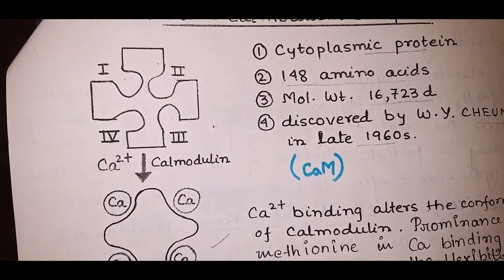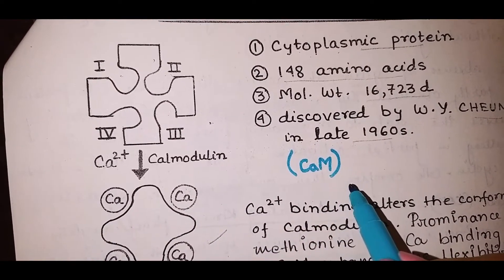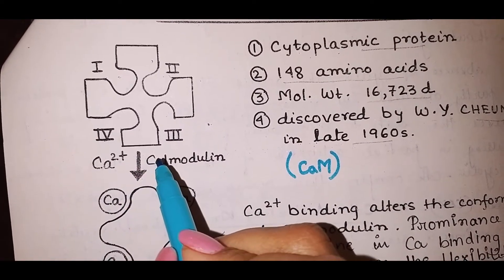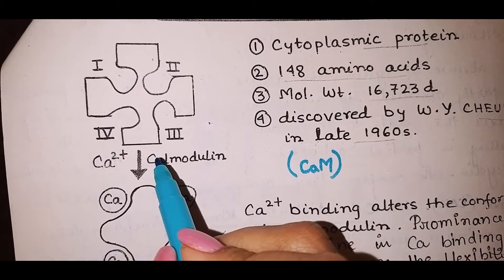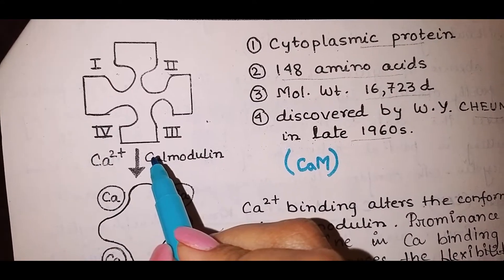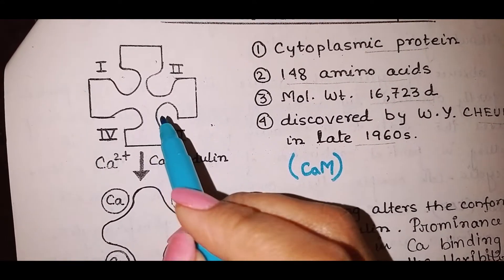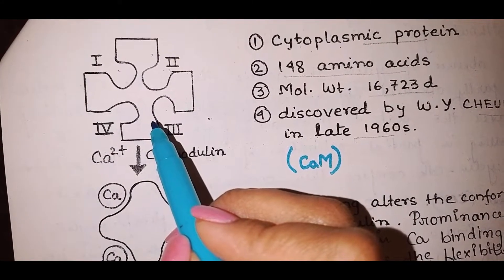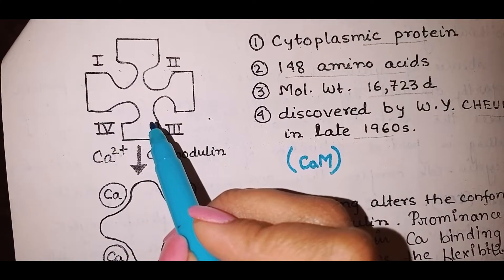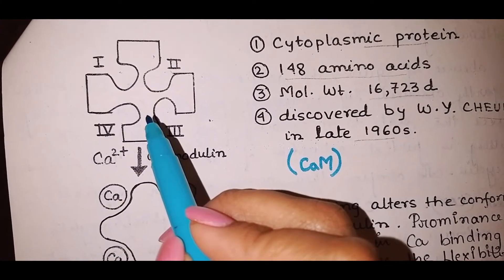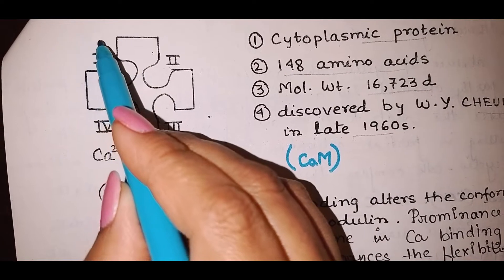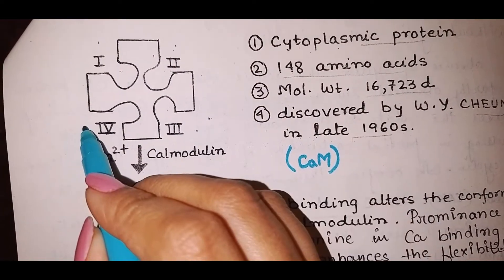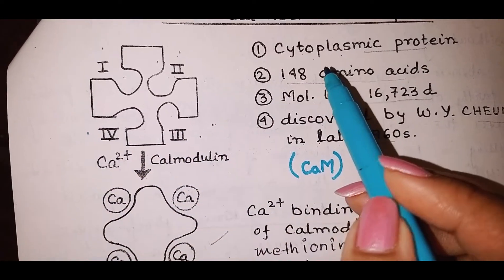Each CaM molecule binds four calcium ions and changes conformation, enabling it to bind and activate other proteins. You see it has four calcium binding regions or loops. Can you see this? One, two, three, four.